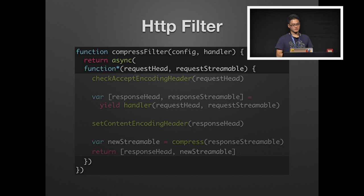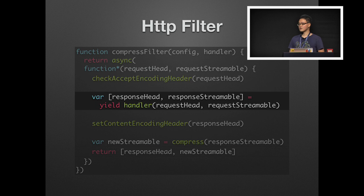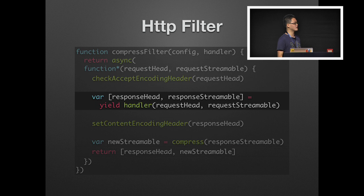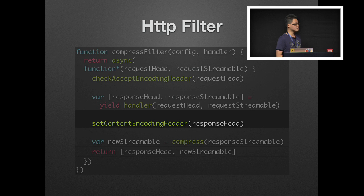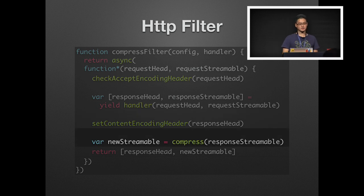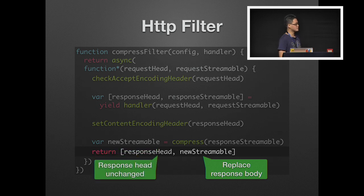Inside the compression filter, it would as usual check the Accept-Encoding request header. For the next step, it would call the original handler and get back its result as a two-element array containing the response. And because the response head and response stream are just plain objects that have not been written to the wire, an HTTP filter can modify the response head — such as adding the Content-Encoding header to it — with no further complication. It can also compress the response body by creating a new streamable out of it, and when returning, it will replace the response body with this new streamable while keeping the response head the same.